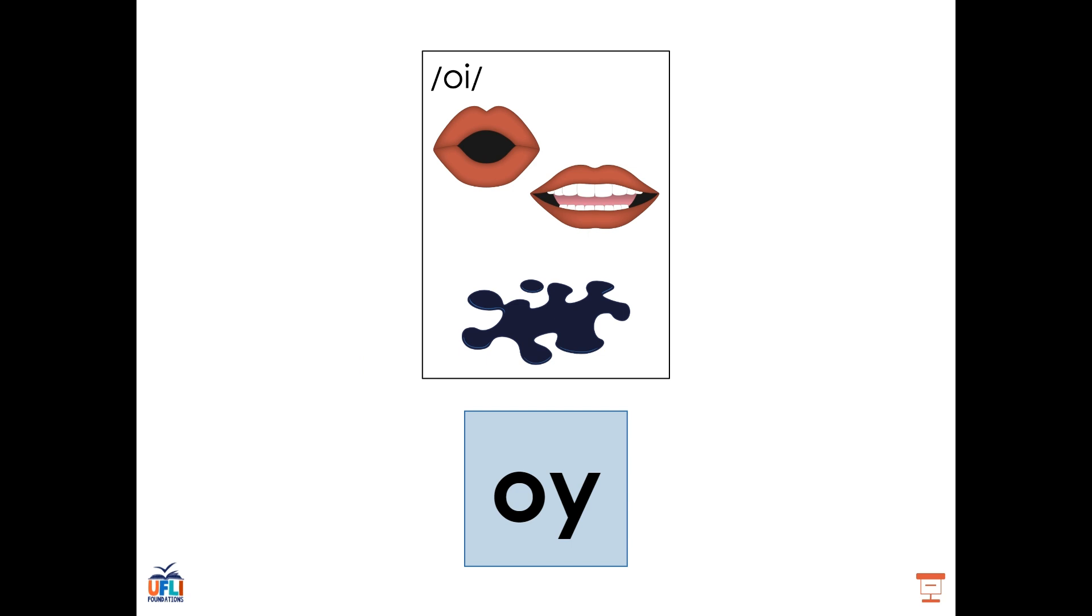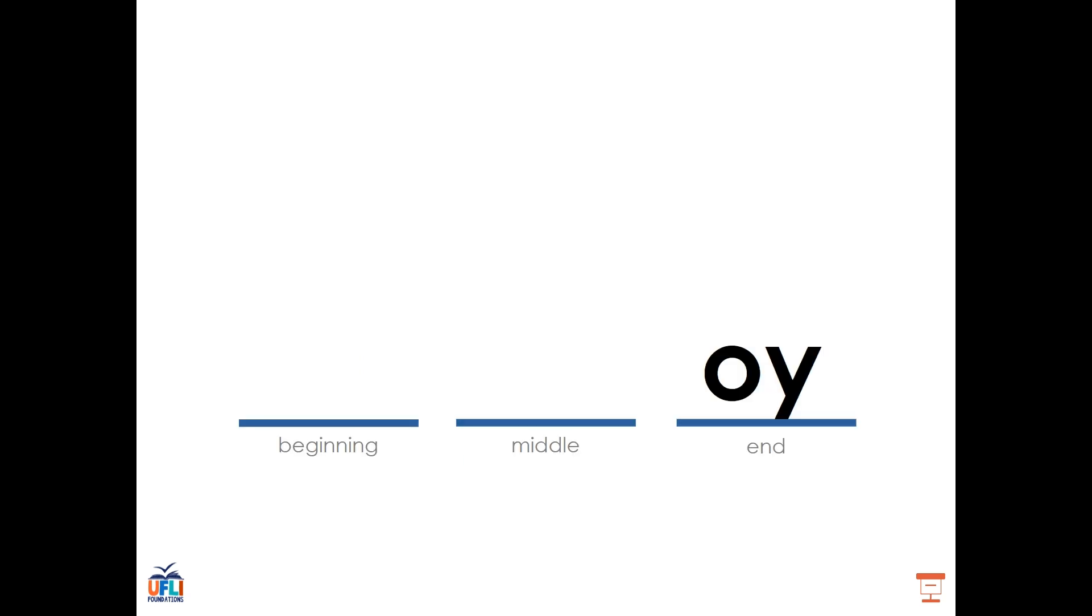O-Y. O-Y also says OI as in oil. Except we more typically see it at the end of words. For example, we may see it in the word boy: B, OI, boy. We see the OY pattern at the end of the word and it's saying OI.